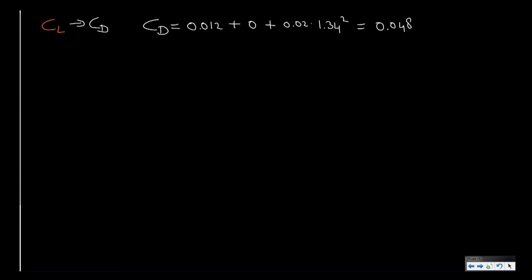Now if we have the CD and we have CL, we can actually calculate the rate of climb in this optimum condition, which was in fact this equation: square root, weight over S, 2 over rho, and CD squared over CL to the power 3.